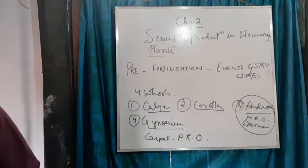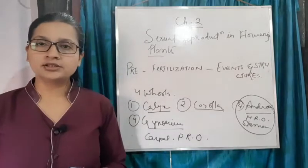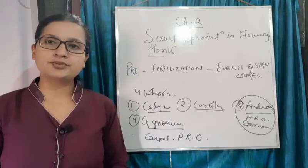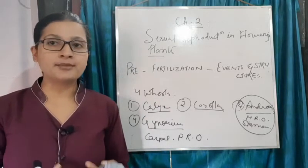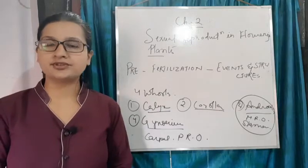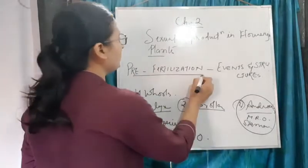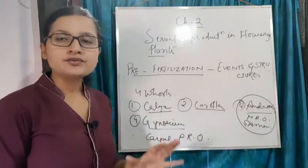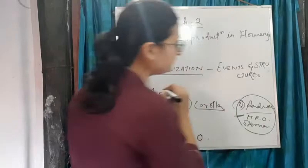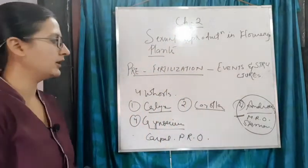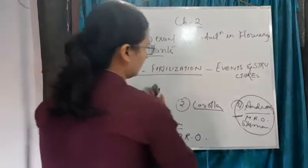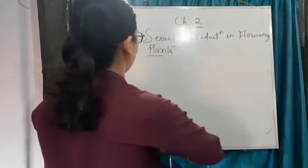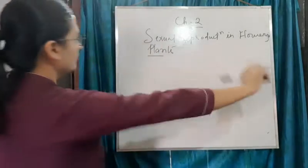In pre-fertilization, plants prepare themselves for the next event, that is fertilization. Here, gametogenesis takes place and transfer of gametes takes place. These are the two main events in pre-fertilization. Today we will discuss the structure of the male reproductive organ.